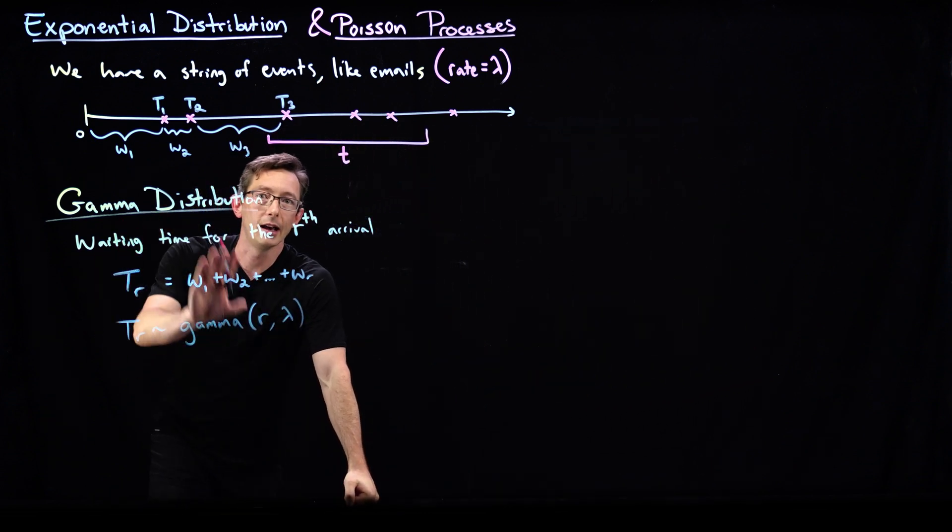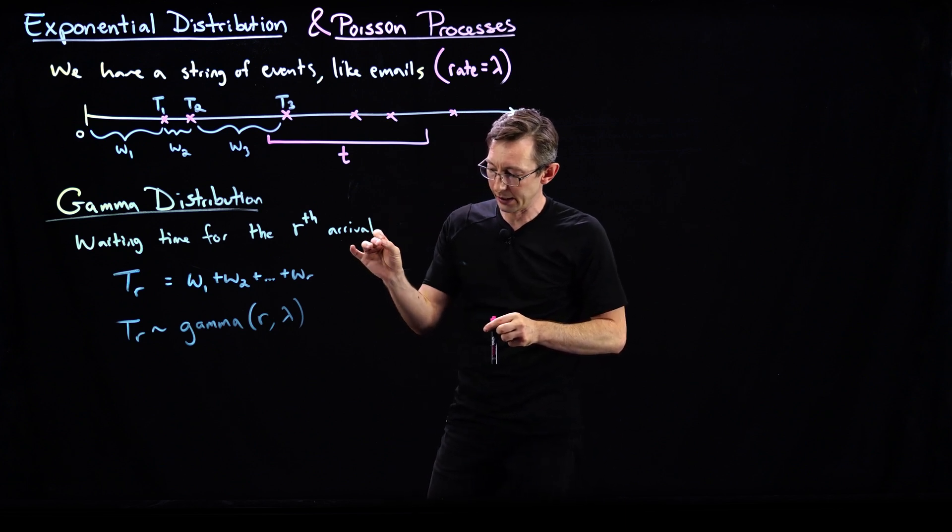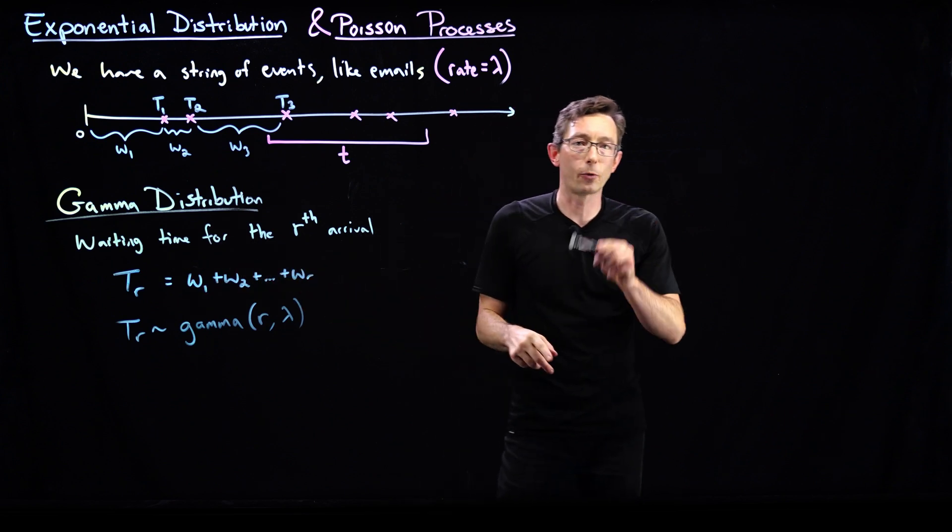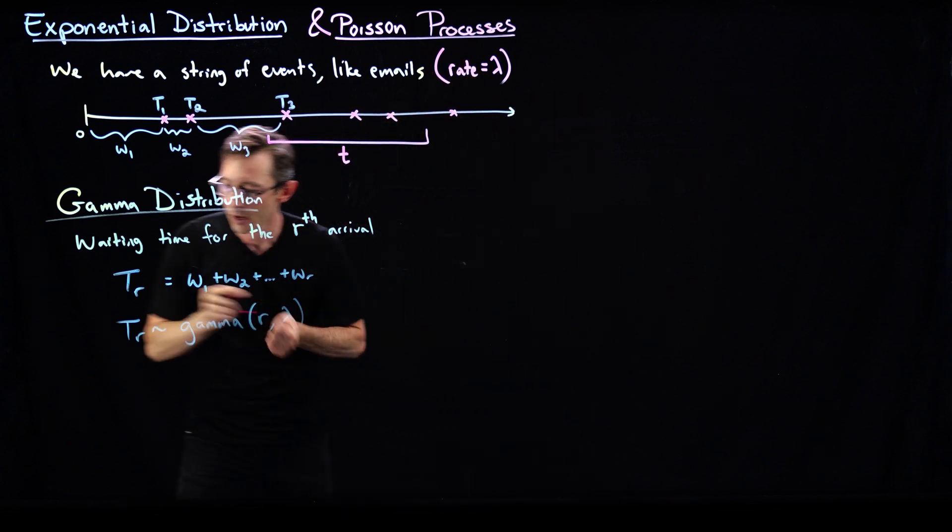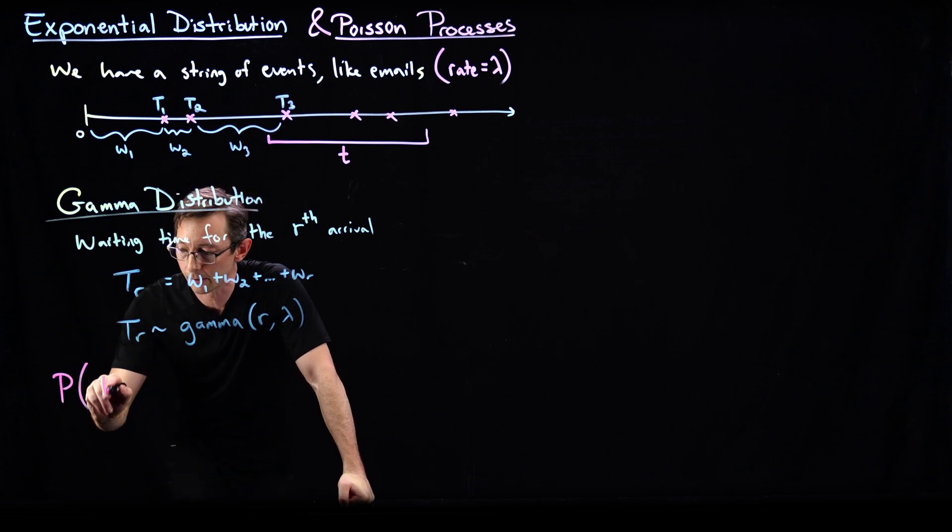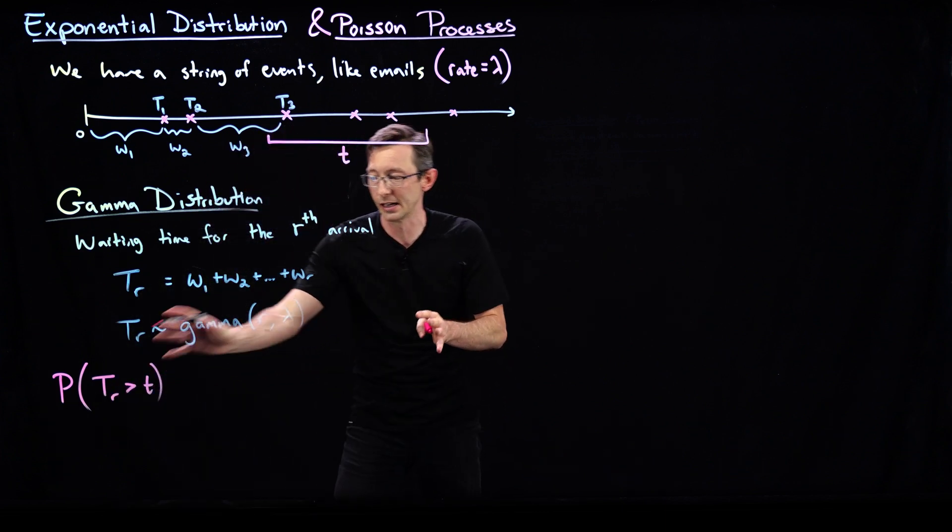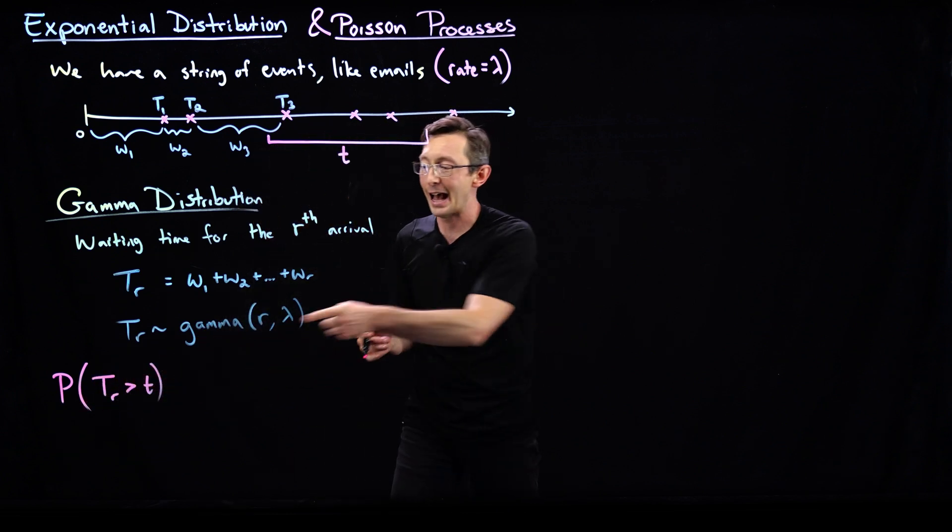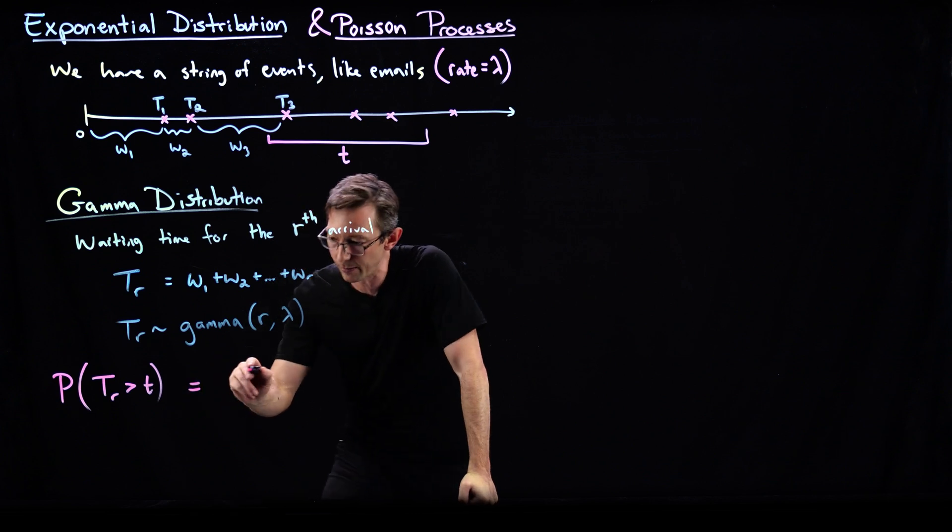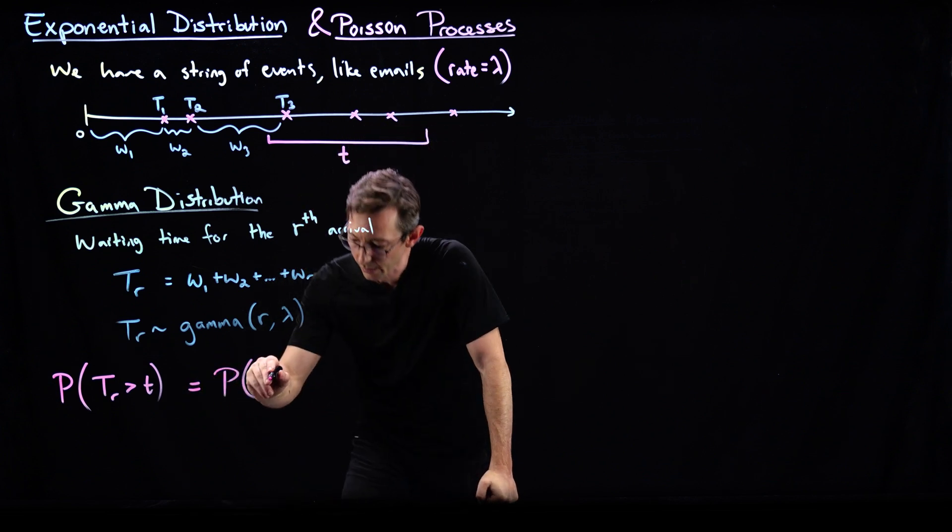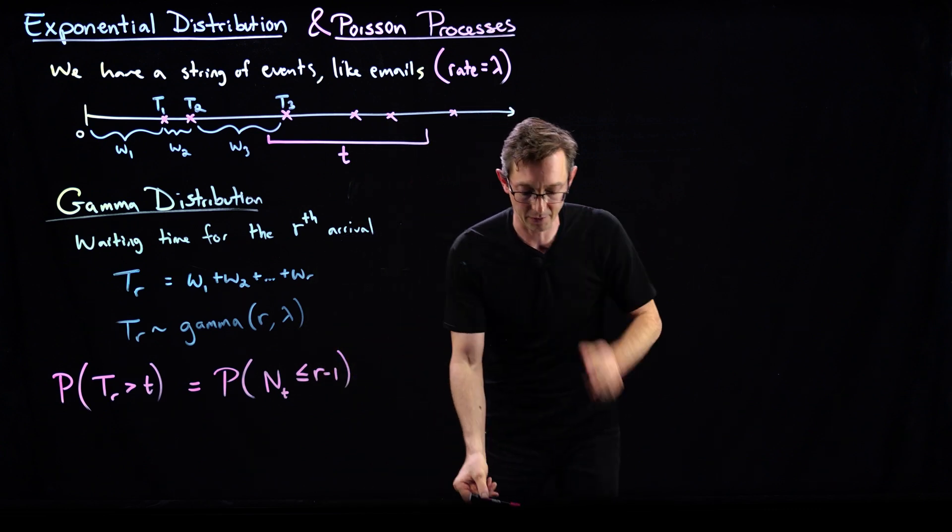So the way that we compute this distribution is, again, we rely on a Poisson process. We say the probability that the waiting time is greater than some t, some little t, is equal to the probability of my Poisson process. The probability that my waiting time Tr is greater than some specific time t is equivalent, this is an equivalent statement, that the number of events that happened in t, less than t, is less than or equal to r minus one. So this is equivalent to the probability of my Poisson process having a number of events Nt being less than or equal to r minus one.